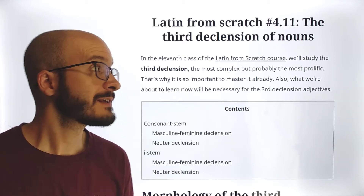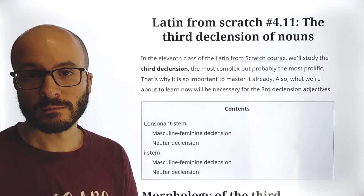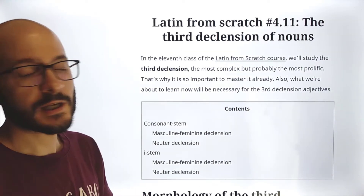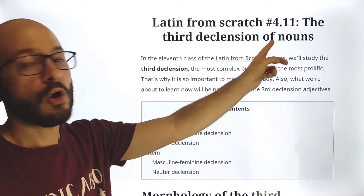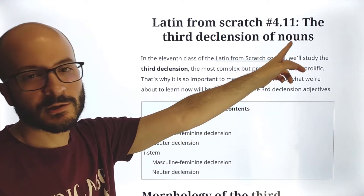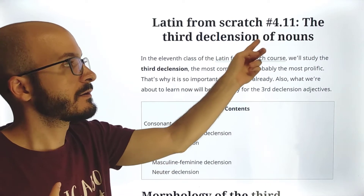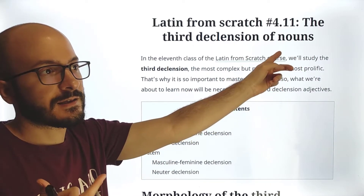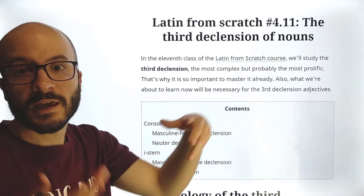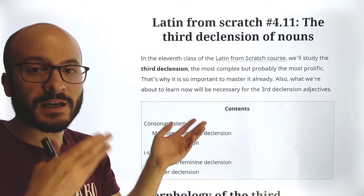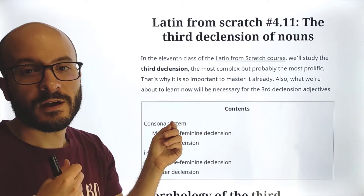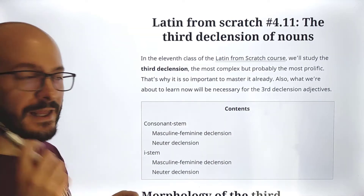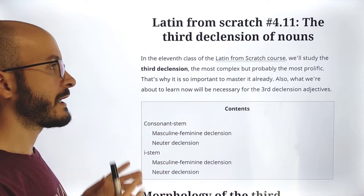Latin from scratch course, eleventh class: third declension. We already know the first declension and the second declension. Now we are going to study the third declension of nouns. I say 'of nouns' because in the next class we are going to learn the third declension of adjectives, which is also the same as the adjectives of the second class. Remember that the first adjectives we saw were the first class adjectives, or two-one-two. But that's for the next class — for now, third declension of nouns.